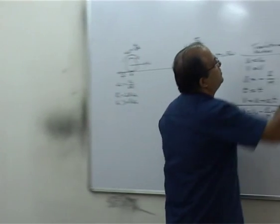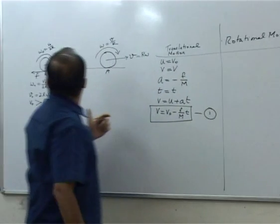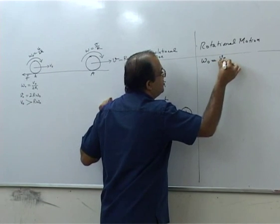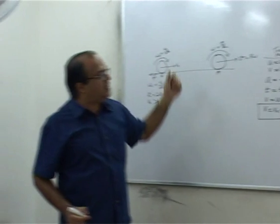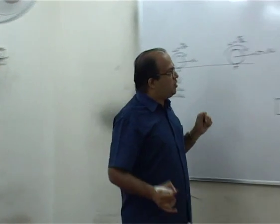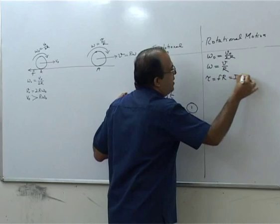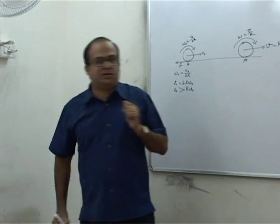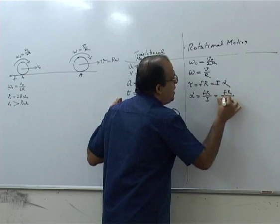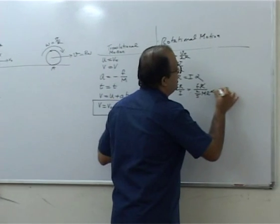Now we study the rotational motion of the ball. The initial angular velocity is v0 upon 2r and the final angular velocity is v upon r. The torque is caused by the friction force, so torque equals fr, which equals I alpha. Therefore alpha equals fr by I, which is fr divided by 2/5 mr squared. One r cancels out, giving alpha equal to 5f by 2mr.